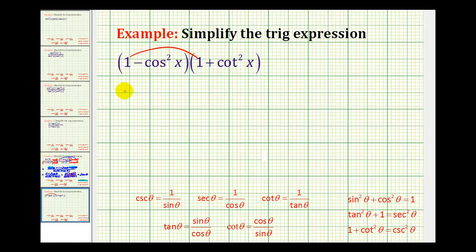We'd have 1 times 1, that would be 1. Then we'd have plus cotangent squared x minus cosine squared x, and then we'd have minus cosine squared x cotangent squared x.